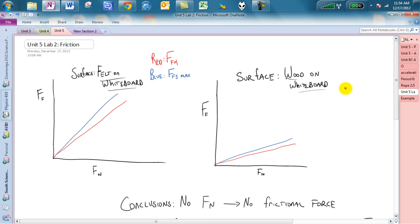The other one that I want you to notice, looking at this, is that felt on whiteboard has two different slopes than the wood on the whiteboard. You will notice that the slopes are a little bit lower.